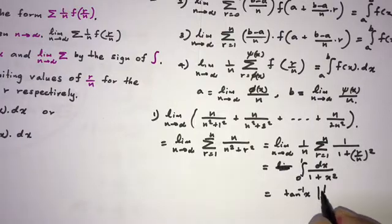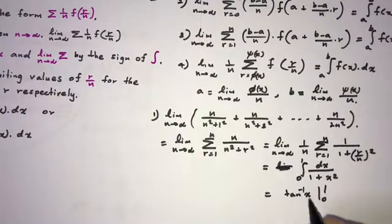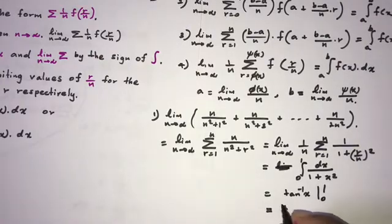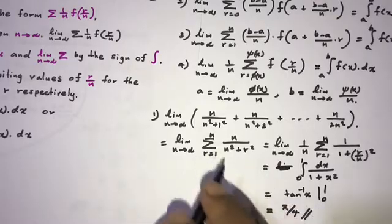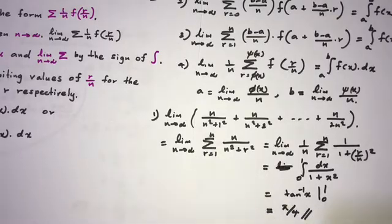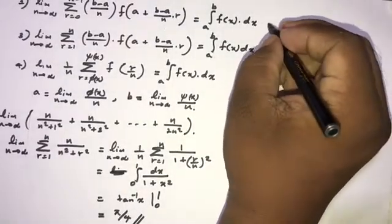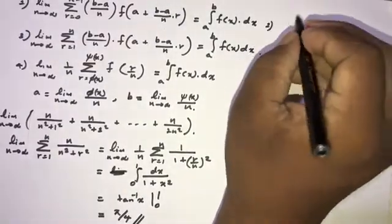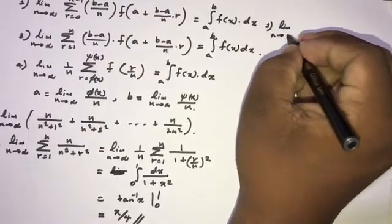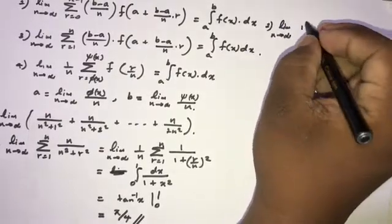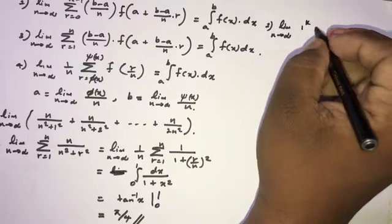We know that the integral of dx/(1+x²) is arctan(x), evaluated from 0 to 1. Plugging in 1, arctan(1) = π/4. So the answer is π/4.